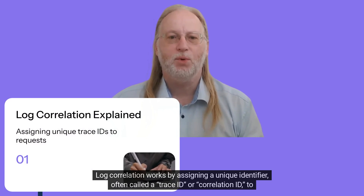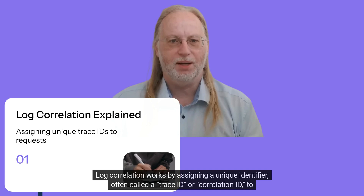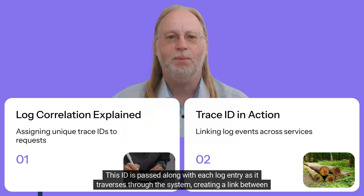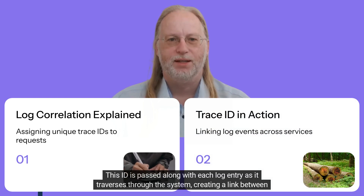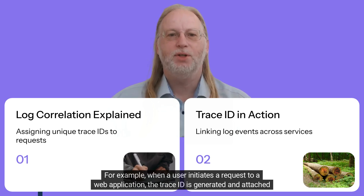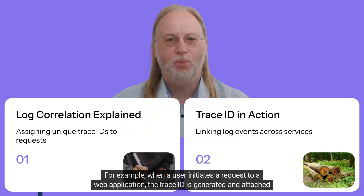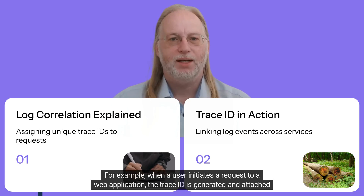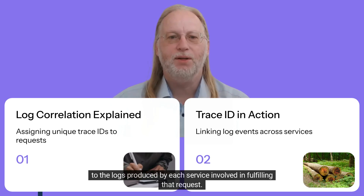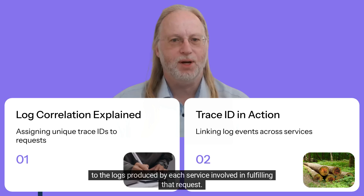Log correlation works by assigning a unique identifier — often called a trace ID or correlation ID — to requests as they flow through the various components of an application. This ID is passed along with each log entry as it traverses through the system, creating a link between different log events. For example, when a user initiates a request to a web application, the trace ID is generated and attached to the logs produced by each service involved in fulfilling that request.